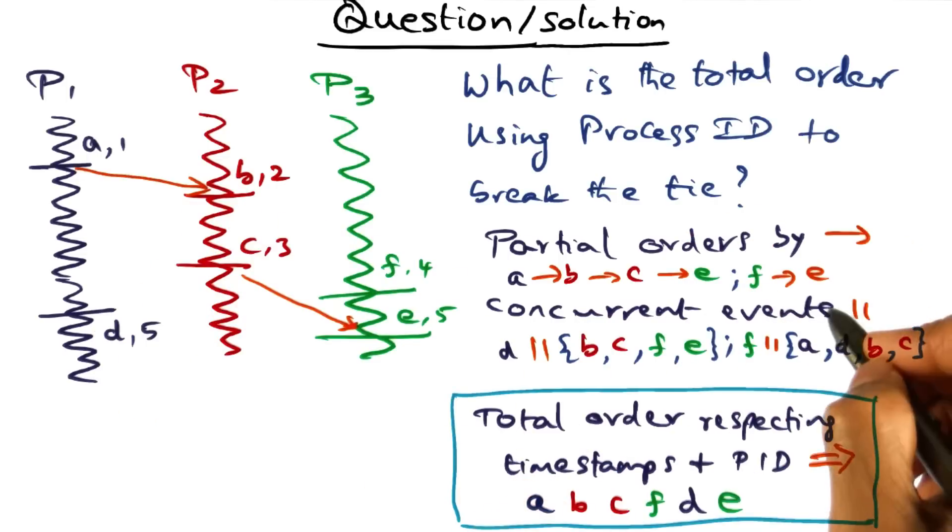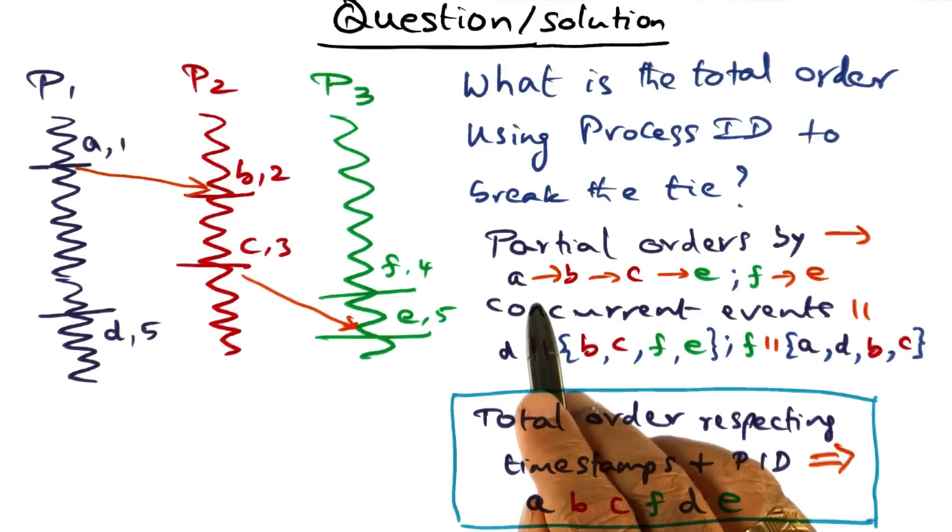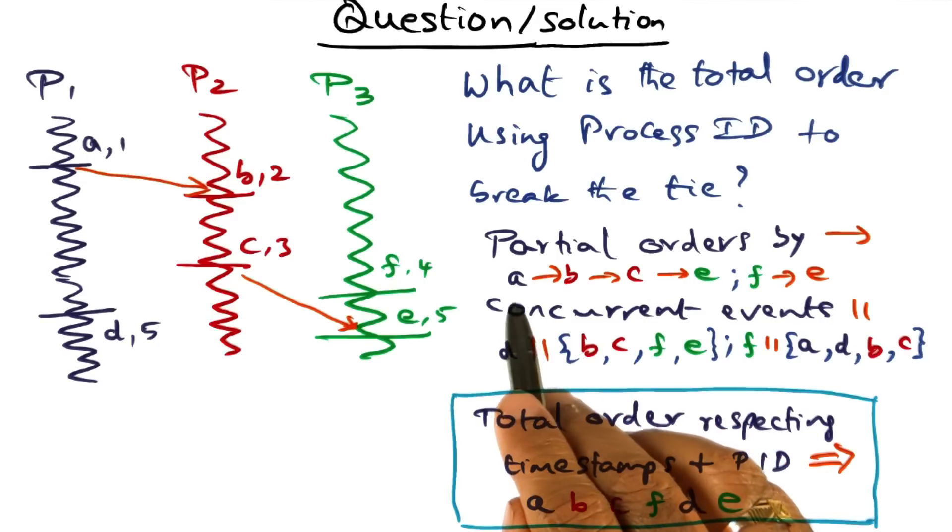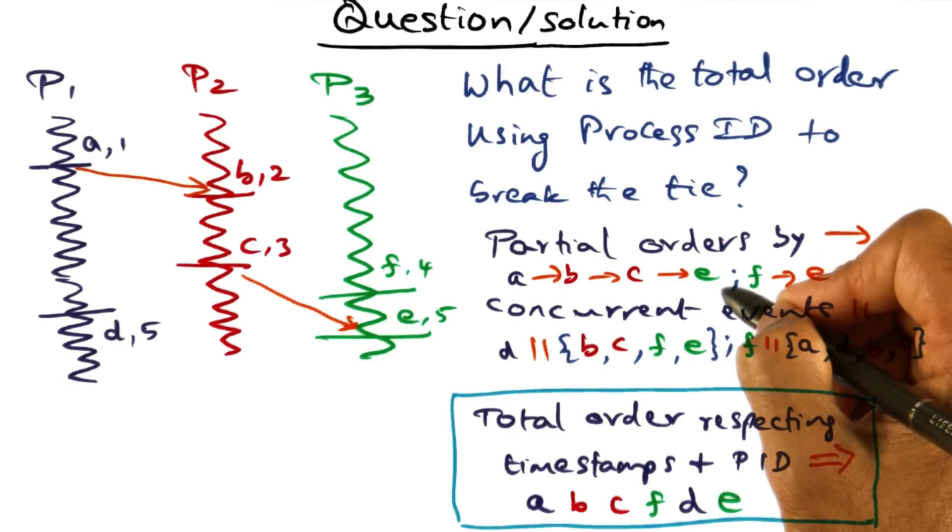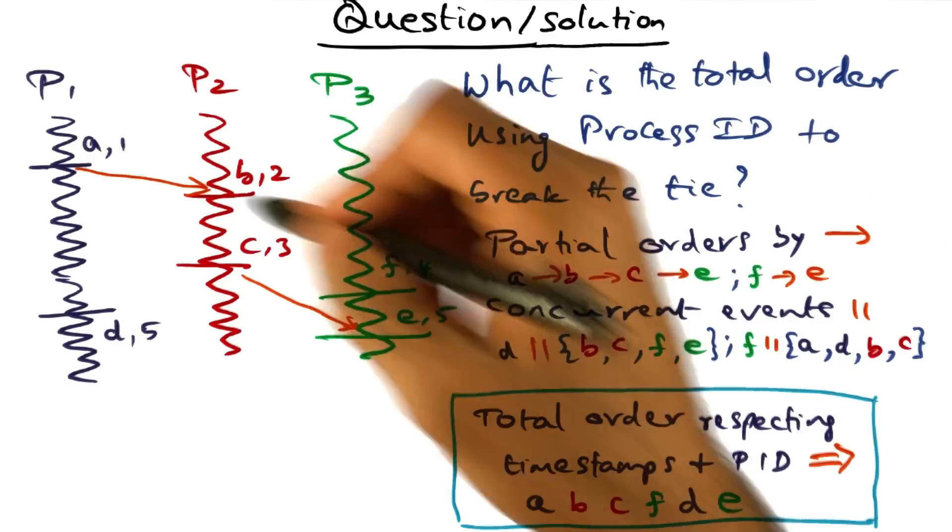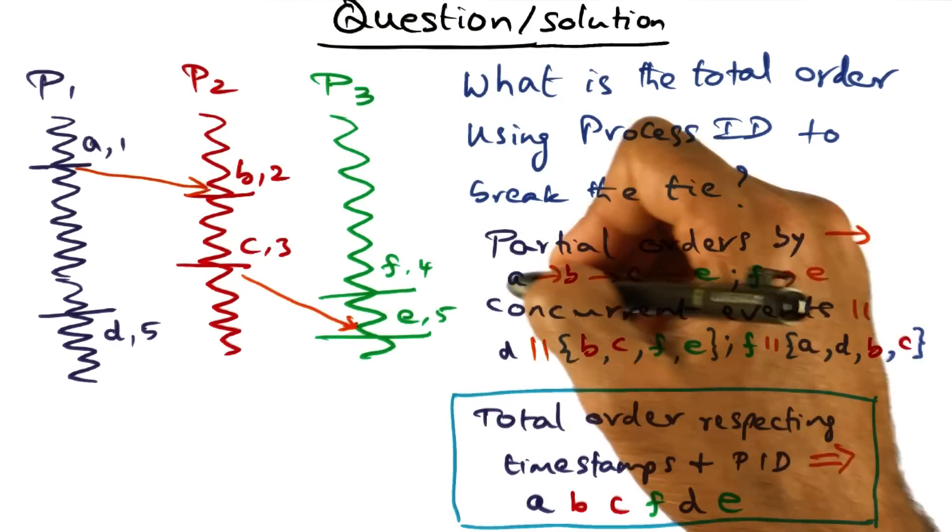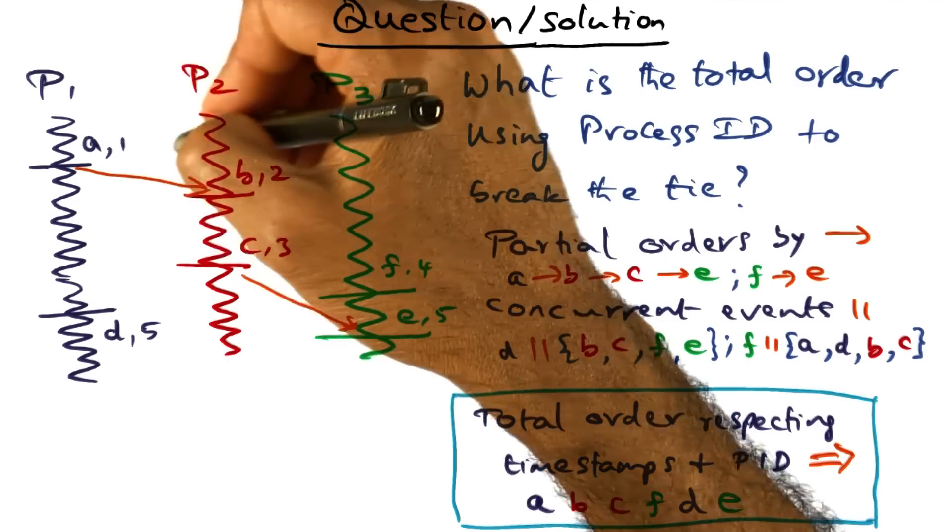So these are the partial orders, and we already have an ordering for the events that follow this chain, because the logical timestamps are assigned in this fashion. And in order to derive a total order, we said we basically will believe the event timestamps to order them totally. So we can order these events totally,